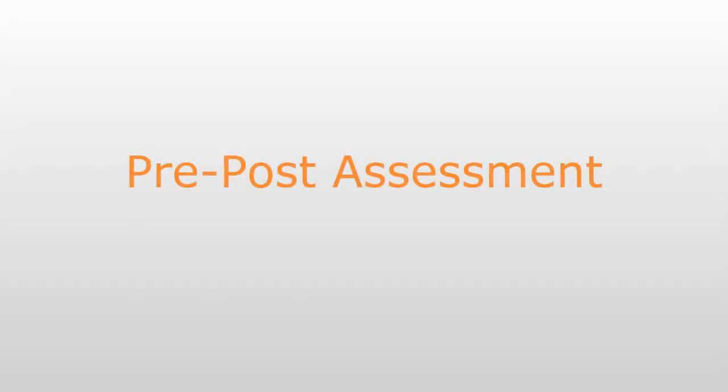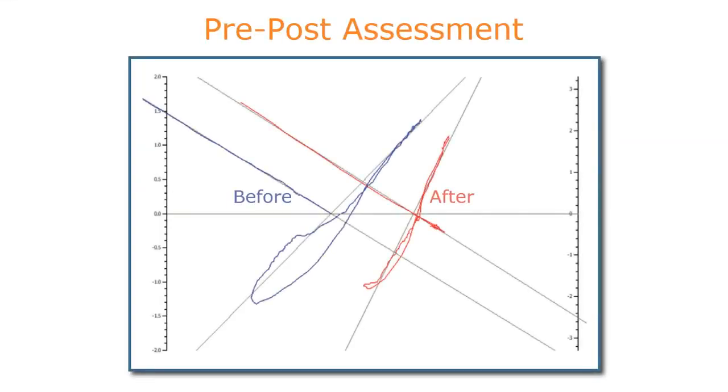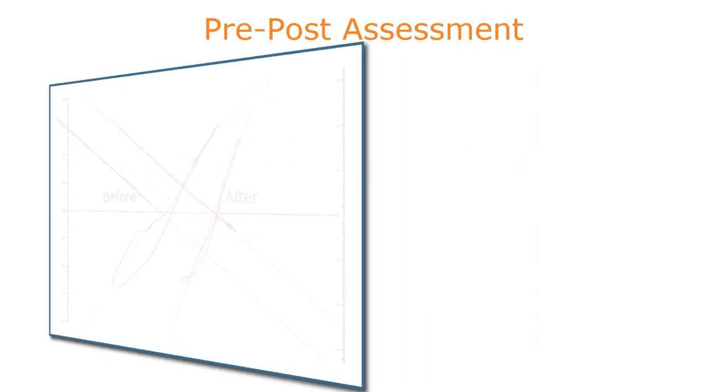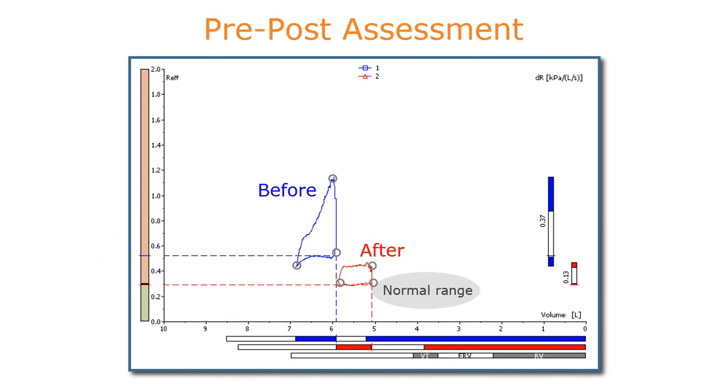The resistance-volume graph is particularly informative, documenting the differentiated and diverse pre-post-bronchodilator response. When we look at the standard graphical display, it is hard to determine the degree of change in airways resistance and lung volumes after medication. Using the resistance-volume graph instead, you can clearly see that the airways resistance after medication has decreased into the normal range.